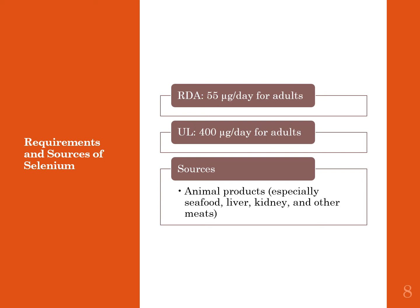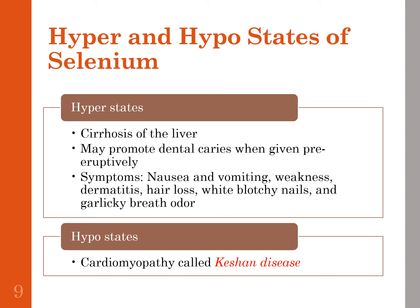Selenium from dairy products and eggs is more readily absorbed and more bioavailable than from other foods. It is also found in whole grain products, nuts, and mushrooms, though those are less easily absorbed. For vegetarians and vegans, one of the best recommendations is to eat a Brazil nut once a week, as that provides approximately a week's worth of selenium.